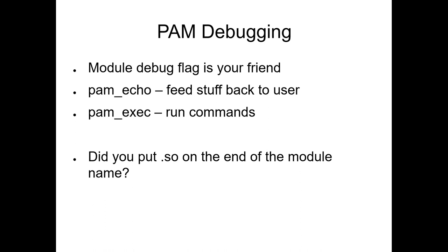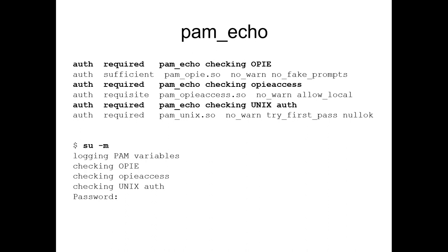The debug flag — first of all, pam_echo feeds stuff back to the user, and pam_exec runs arbitrary commands as part of authentication. The first question I always ask myself when PAM goes belly up is: did I put the .so at the end of the module name? Here I've added a pam_echo statement in front of each rule in the auth chain, so when the user tries to log in, it says what module runs.